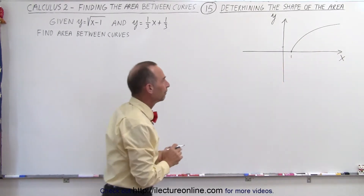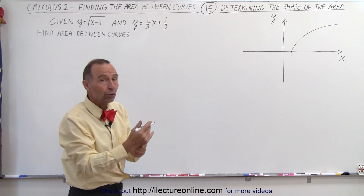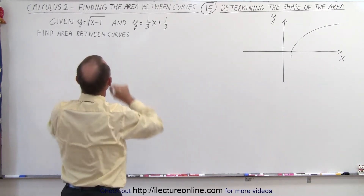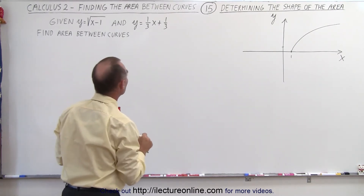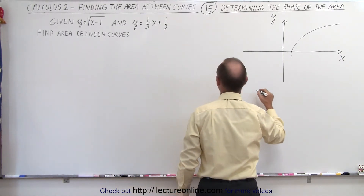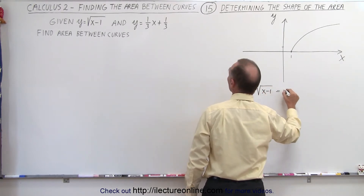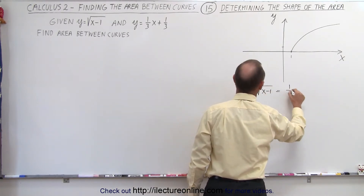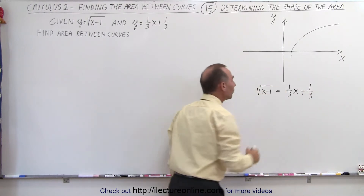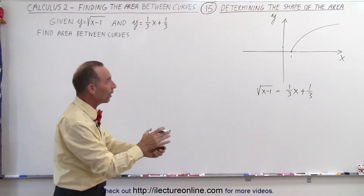To determine whether the functions cross, we should find the crossing points by solving the two equations simultaneously — setting the square root of x minus 1 equal to one-third x plus one-third, and solving for x to see if there are actual intersection points.